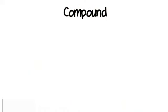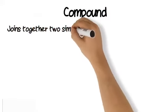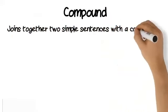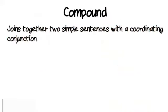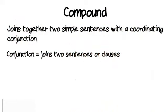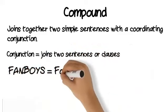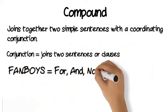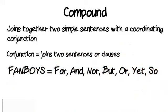The second type of sentence is a compound sentence. It joins together two simple sentences with a coordinating conjunction. A conjunction joins two sentences or clauses. An easy way to remember coordinating conjunctions is to remember the word FANBOYS: For, And, Nor, But, Or, Yet, So.